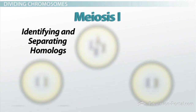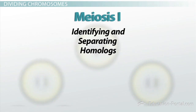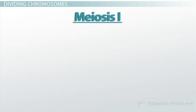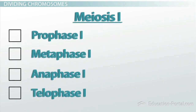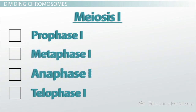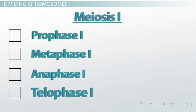Meiosis one is sometimes referred to as a reductional division, because it reduces the number of chromosomes in the cell by half. The meiotic one cell division consists of four basic steps: prophase one, metaphase one, anaphase one, and telophase one.